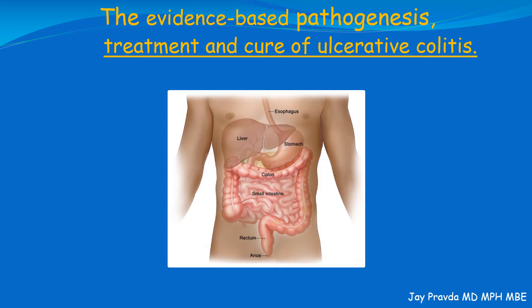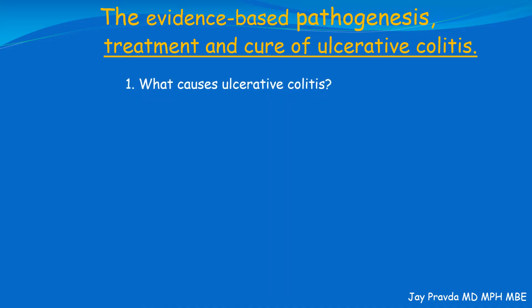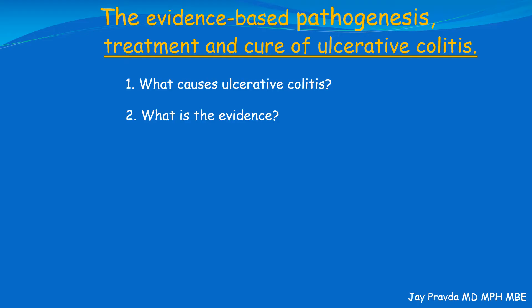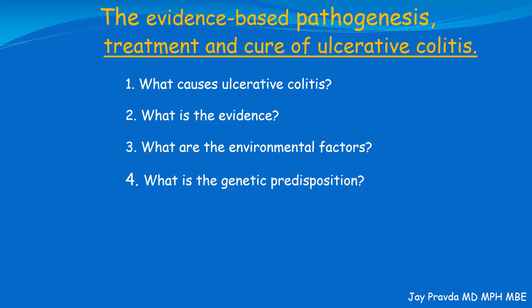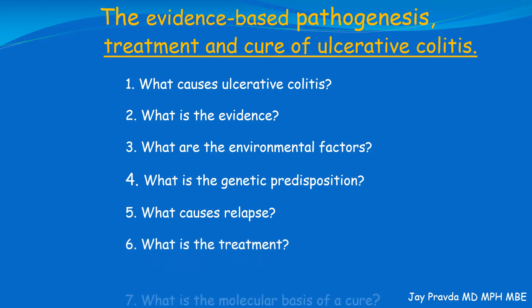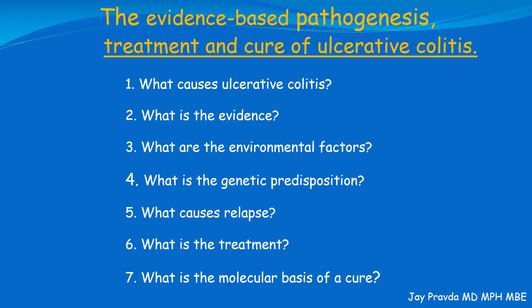In this video, we will answer the following questions to fill in the gaps. One, what causes ulcerative colitis? Two, what is the evidence? Three, what are the environmental factors whose exposure increases the risk of developing ulcerative colitis? Four, what is the genetic predisposition that causes some people to develop ulcerative colitis? Five, what causes relapse? Six, what is the correct evidence-based treatment? And seven, what is the molecular basis of a cure?